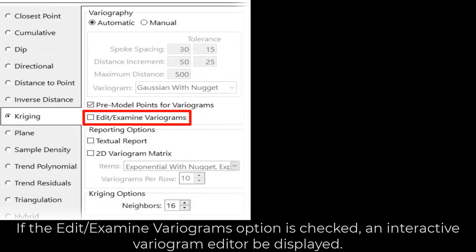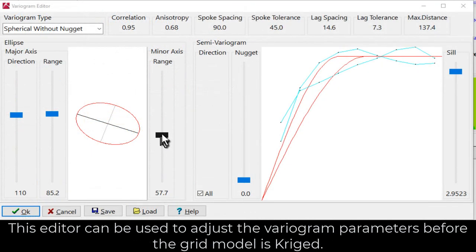If the Edit Examine Variograms option is checked, an interactive variogram editor will be displayed. This editor can be used to adjust the variogram parameters before the grid model is Kriged.